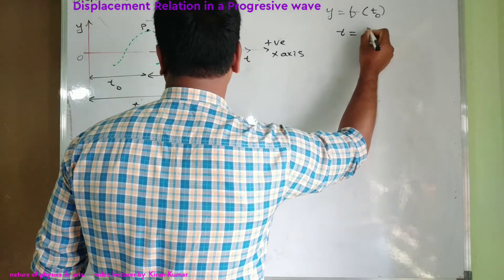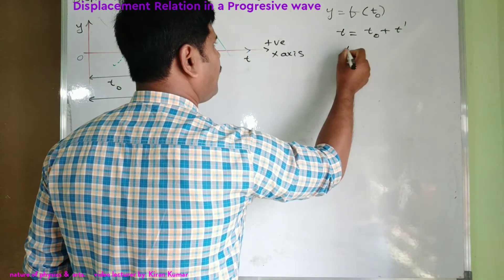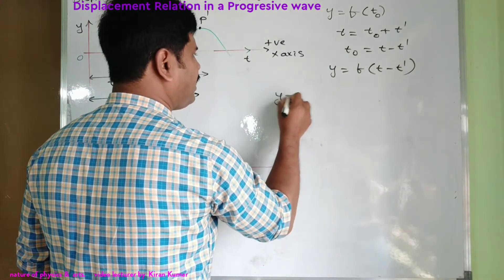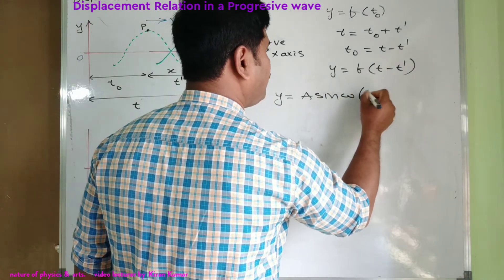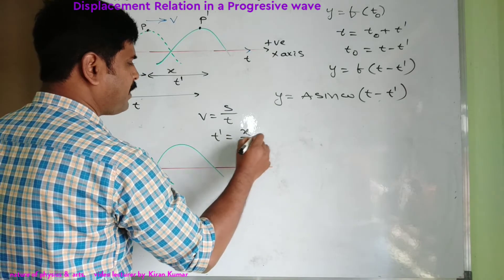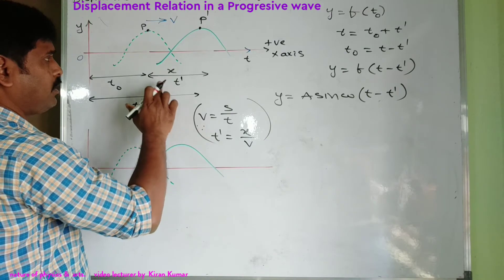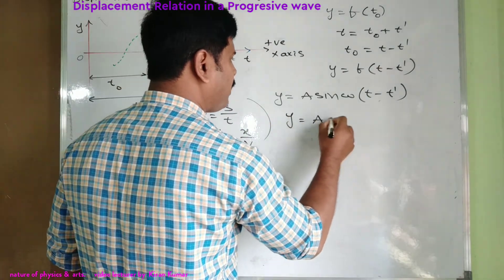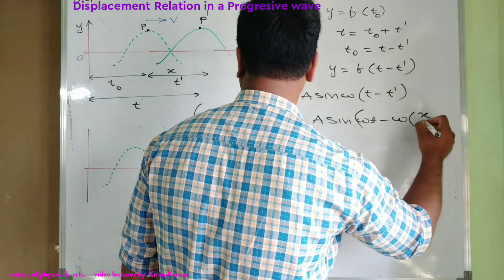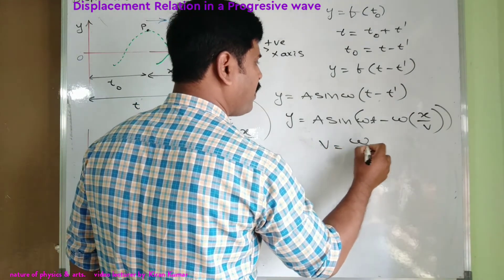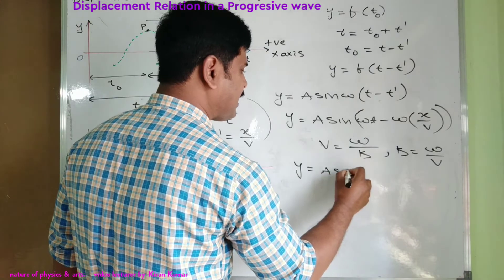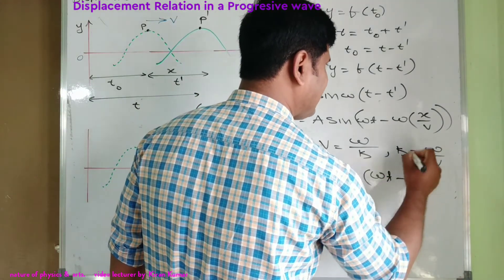Here t equals t-naught plus t-dash, so t-naught equals t minus t-dash. Therefore y equals f(t − t-dash), giving y equals a sin(ω(t − t-dash)). Since velocity v equals s by t, t-dash equals x by v. Then y equals a sin(ωt − ω·(x/v)). Since v equals ω/k and k equals ω/v, we get y equals a sin(ωt − kx).